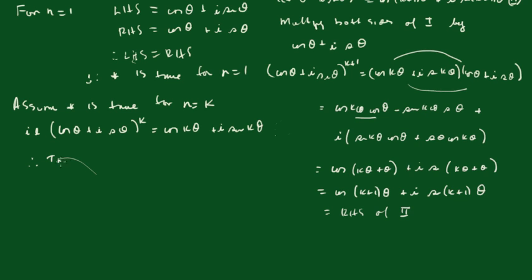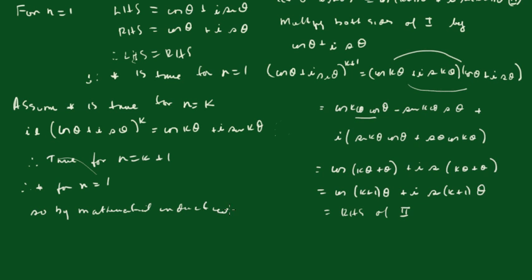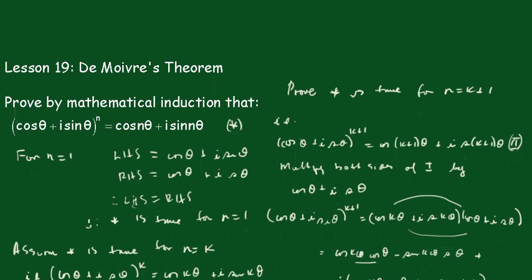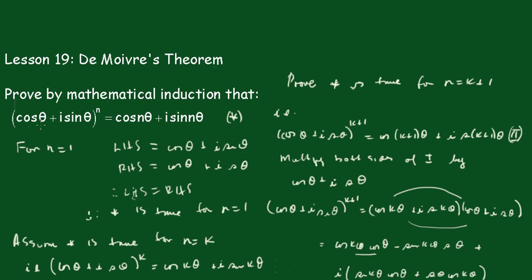Therefore, this is true for n equals k+1. Since the theorem is true for n equals 1, by mathematical induction it is true for all n greater than or equal to 1. It is also true for negative powers, but we won't look at that proof here. So we've proved by induction that (cos θ + i sin θ) to the power n equals cos nθ + i sin nθ — a really useful and very powerful result.